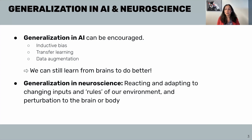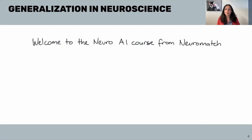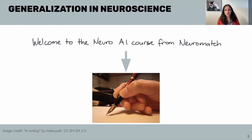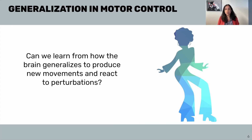In this tutorial, we're going to go from reading and understanding handwritten text, as in the last tutorial, to the writing or generation of movements. What does generalization mean in the case of generating movements or motor control?